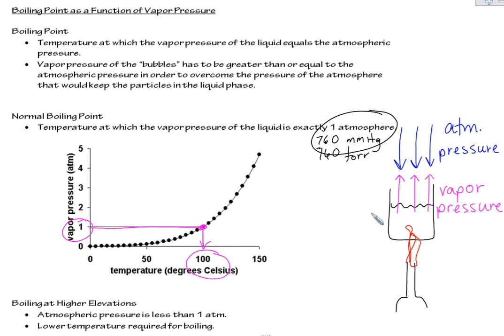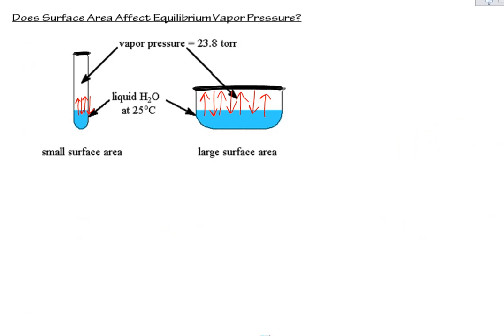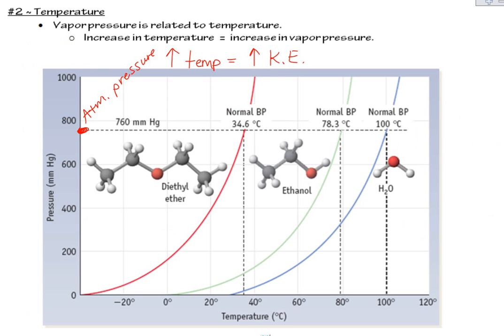You can also see a graph we looked at on a previous slide. Here the pressure is in millimeters mercury, and this line going across represents about 760 millimeters mercury. So as I follow this across,